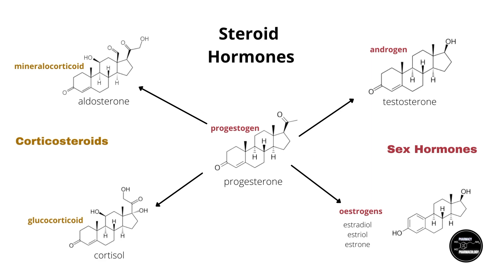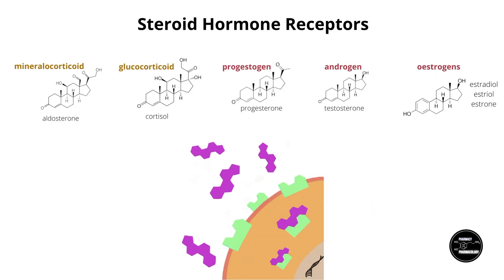Each type of steroid hormone has its own receptor type — so there's the mineralocorticoid receptor for aldosterone, the glucocorticoid receptor for cortisol, and so on. Perhaps not surprisingly, given the similarity of the steroid hormones, the steroid receptors are also quite similar to each other, and there's some cross-talking between steroid hormones and their different receptors. I'm only going to touch on cross-talking with regards to progesterone in order to keep this video brief.